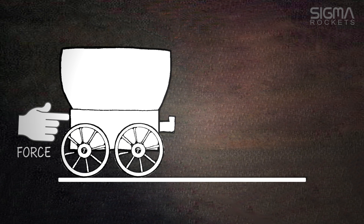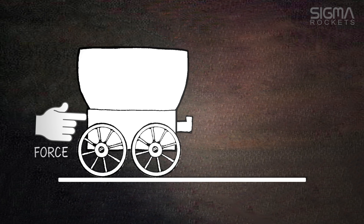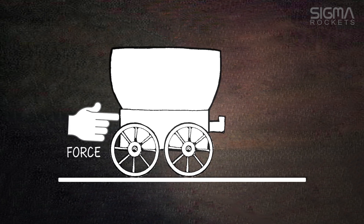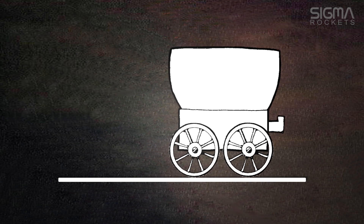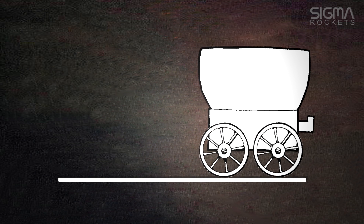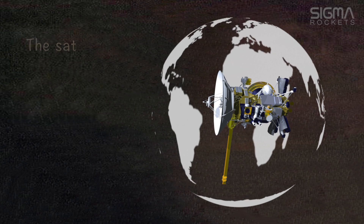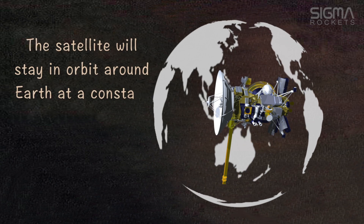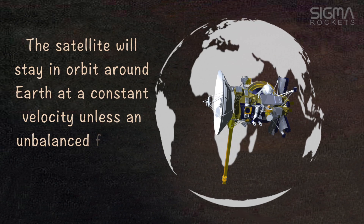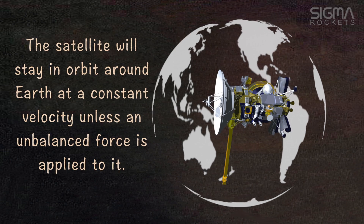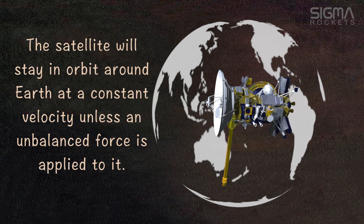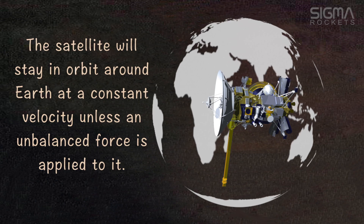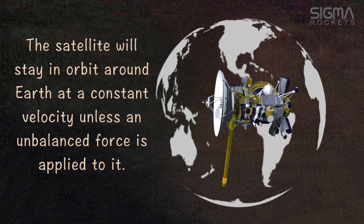In order to move the wagon we have to apply an unbalanced force, as shown here. If we ignore friction and air resistance, the wagon will keep moving even after the force is removed. A satellite in orbit is a good example of Newton's first law — in order to maintain orbit, the satellite is traveling at a velocity such that the earth curves away beneath it. With the absence of atmospheric friction, the satellite will not require additional force to continue circling the earth.